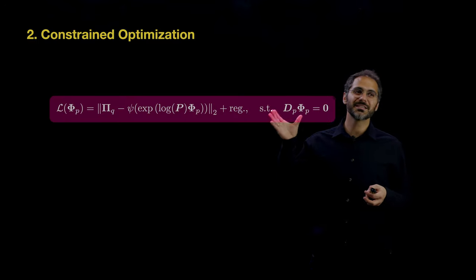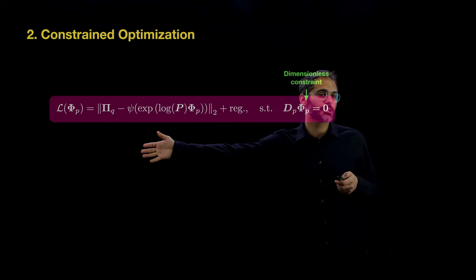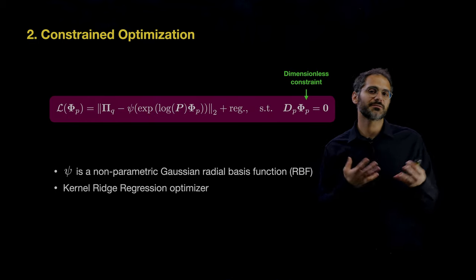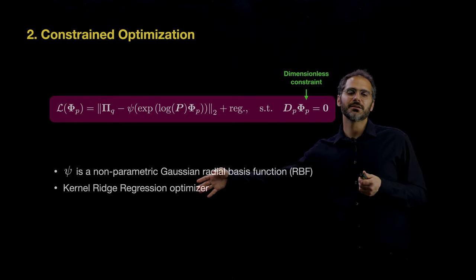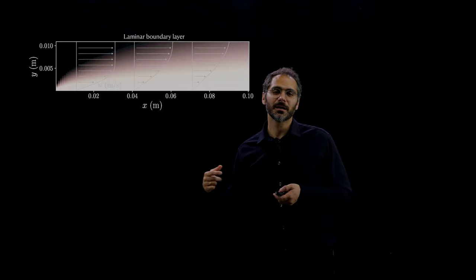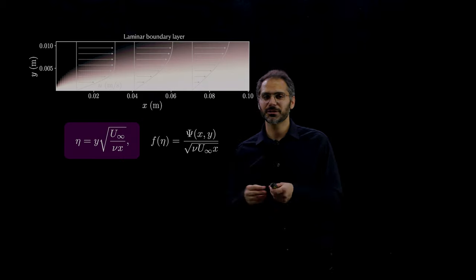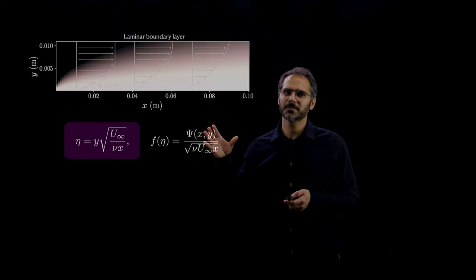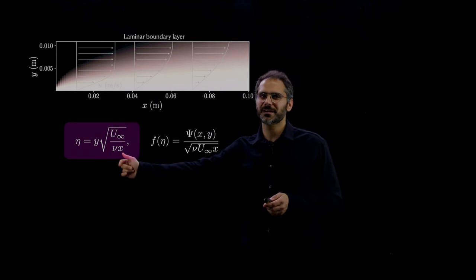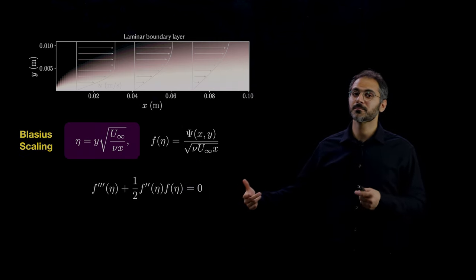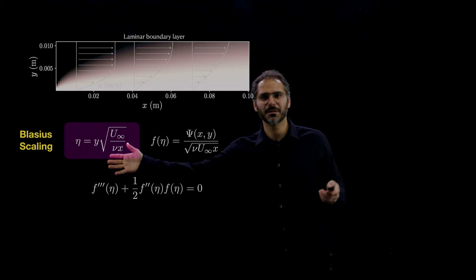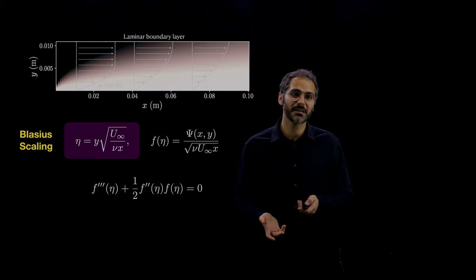The second method is constrained optimization. Here we use D*phi=0 as a hard constraint, and c is a non-parametric Gaussian radial basis function, using kernel ridge regression as the optimizer. To illustrate this on a different problem — laminar boundary layer flow — which is a complex problem in fluid dynamics with a rich history: the goal is to solve the stream function c(x,y). By doing a relatively simple change of variables, you can reduce it to a third-order nonlinear ODE in eta. There's been analytical work done to discover this eta historically, but with constrained optimization we can find something very close to the expected dimensionless variable using only data.